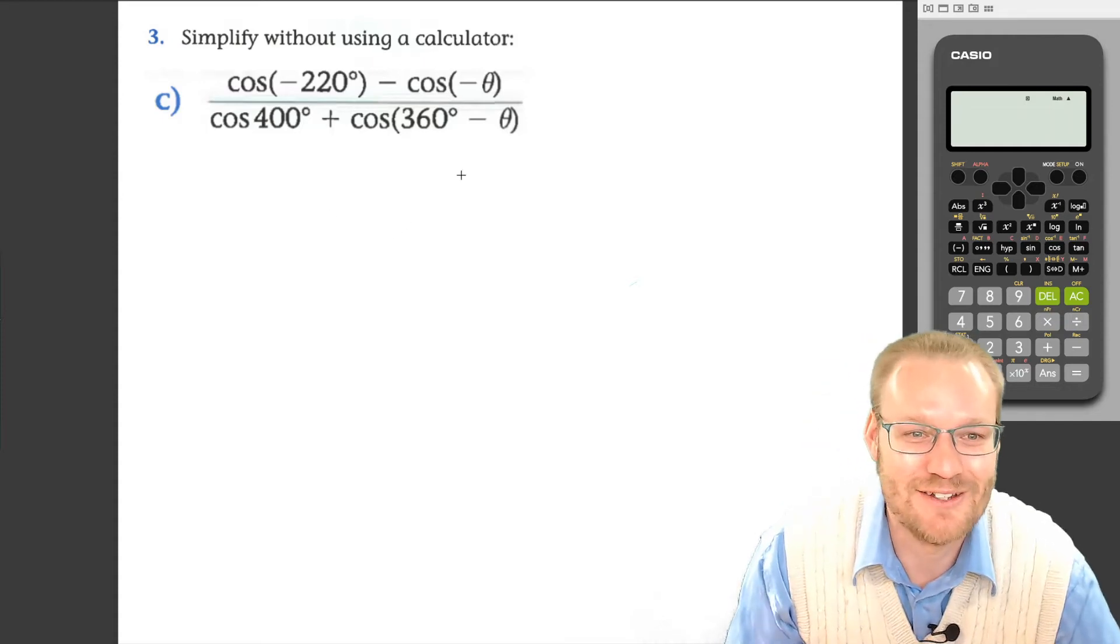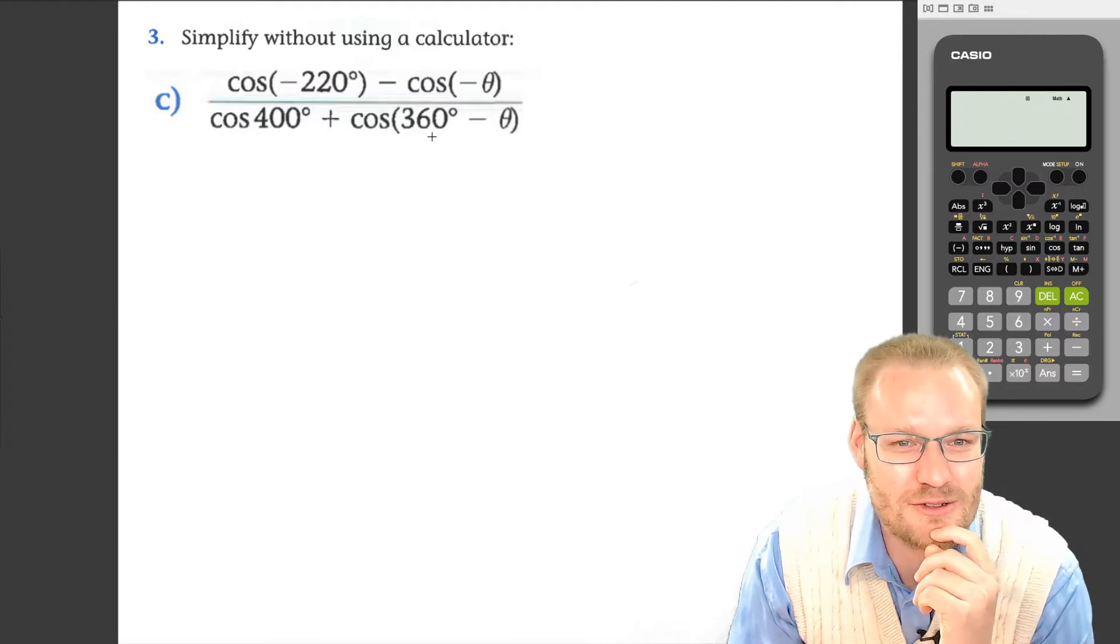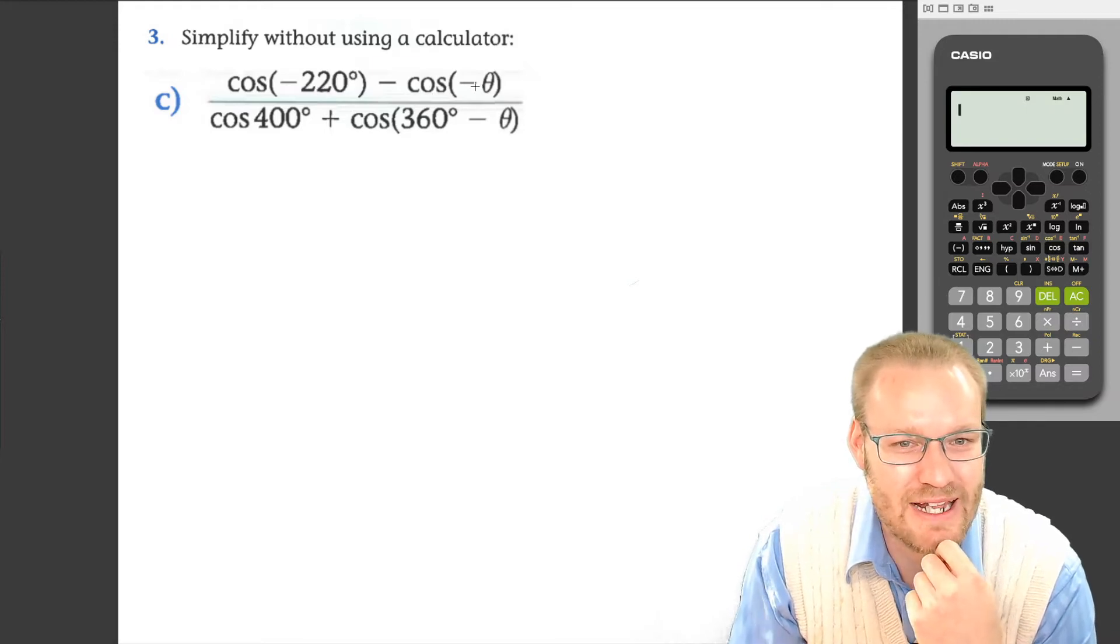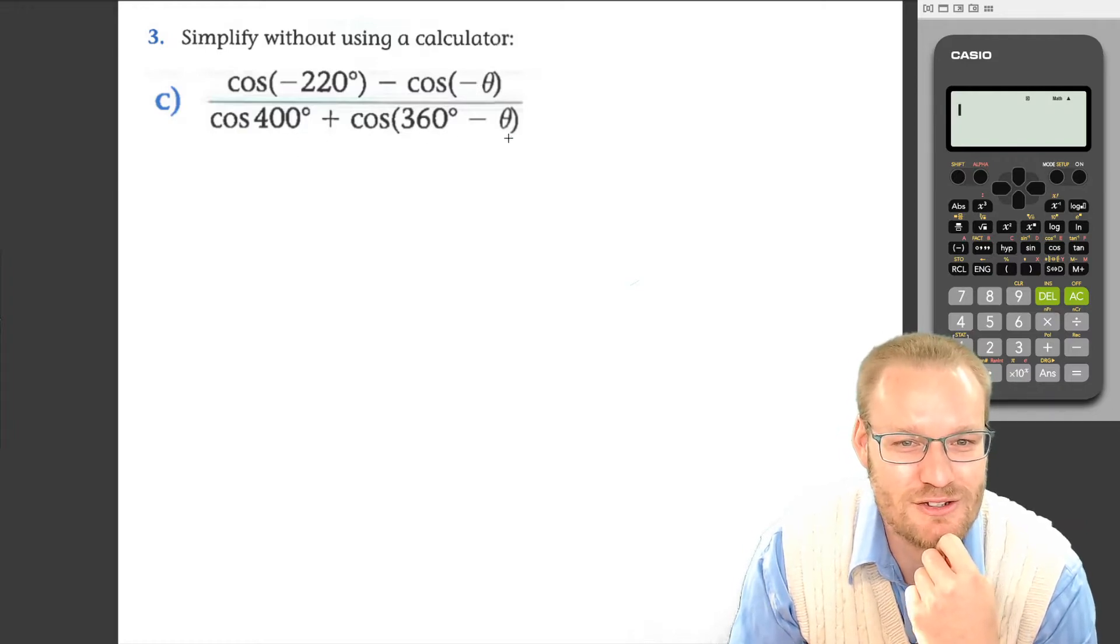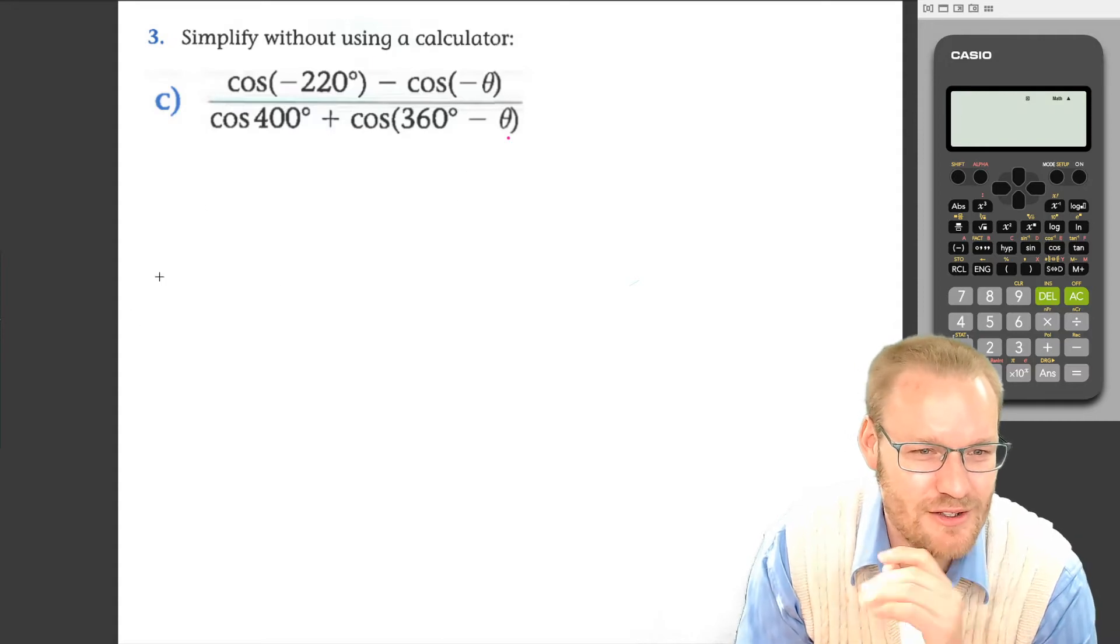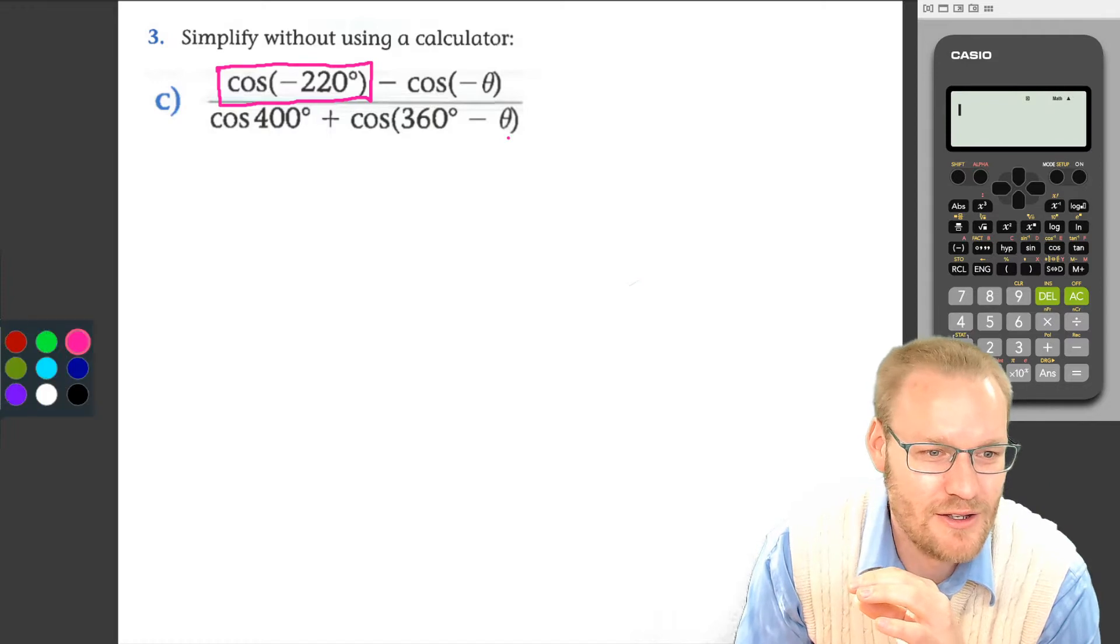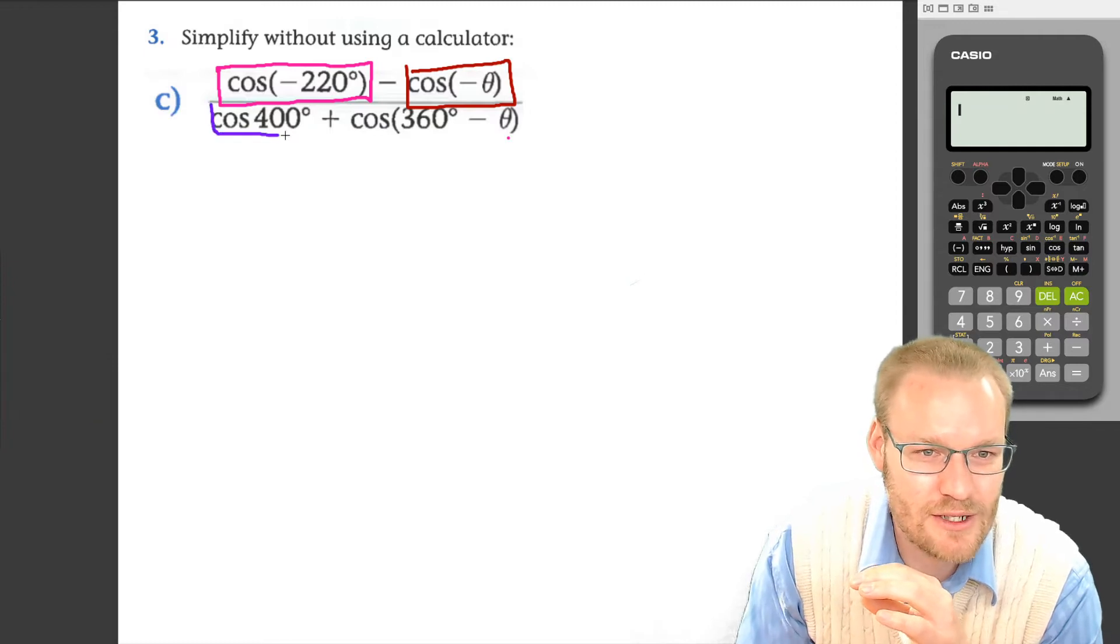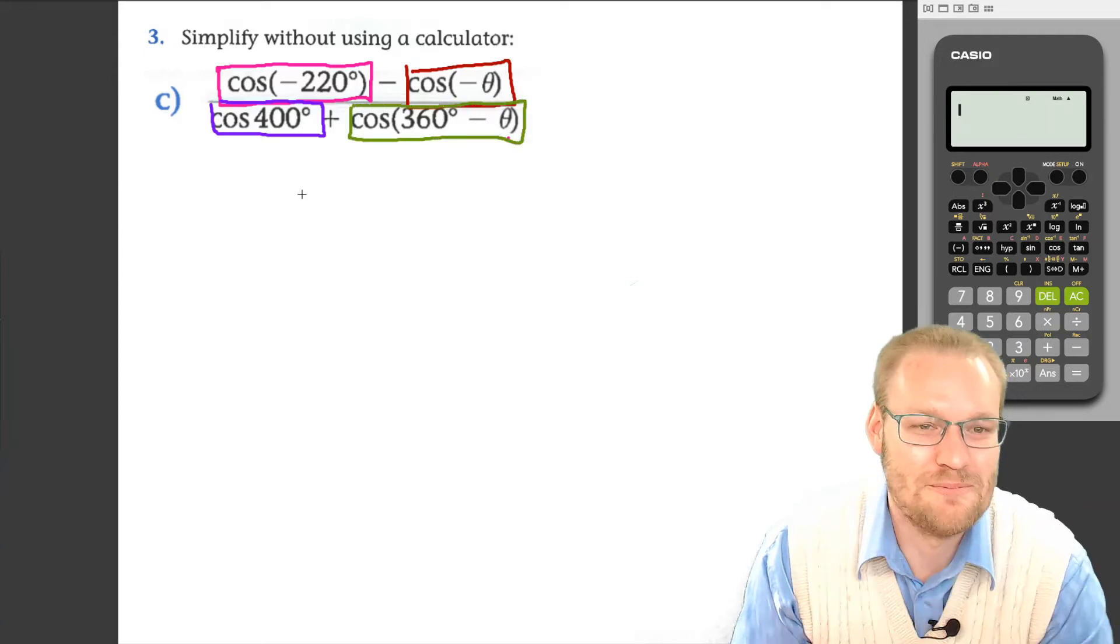Right, question 3c, another juicy one. Let's just pause and see what we're going to do here. We've got cos(-220°), we've got a negative theta, and 400, 360 minus theta. There are quite a few things to do here, so let's run through them step by step. Let's get our color system ready: that one in pink, that one in maroon, maybe this one in purple, and our last one in beautiful green.